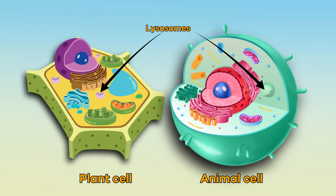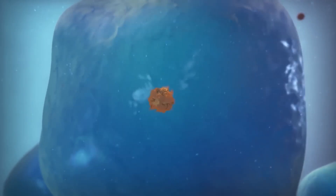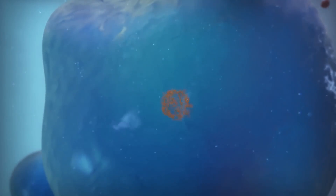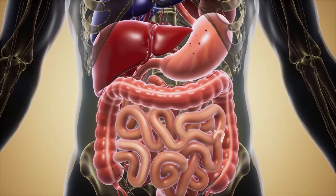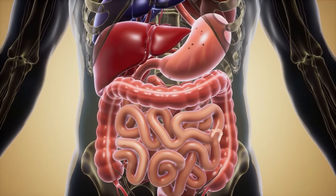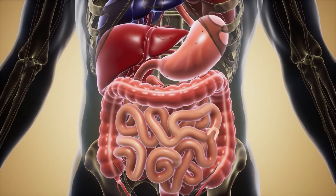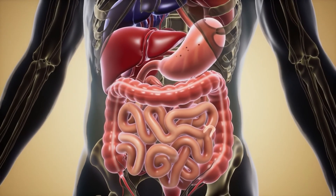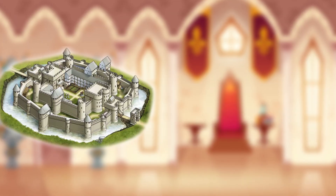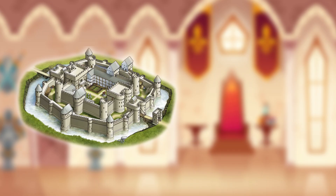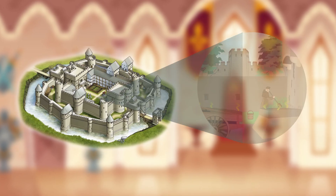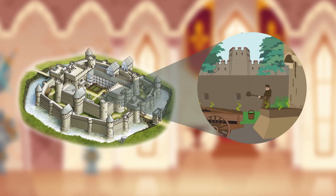The Golgi apparatus also builds lysosomes. Lysosomes help rid a cell of waste materials, working a lot like our digestive system does. Consider them to be a castle's very efficient cleanup crew.